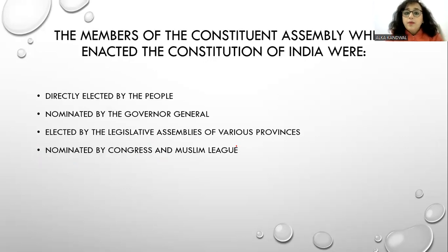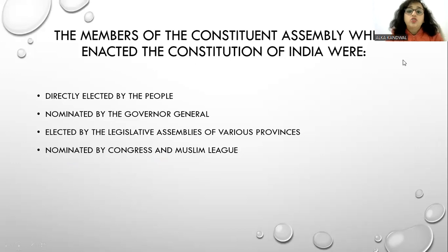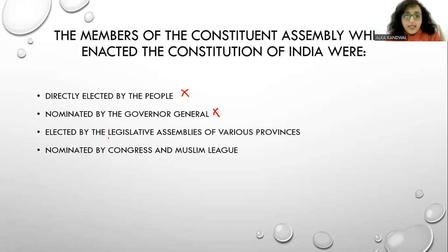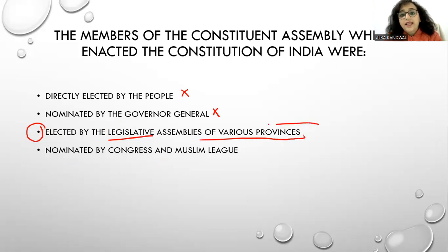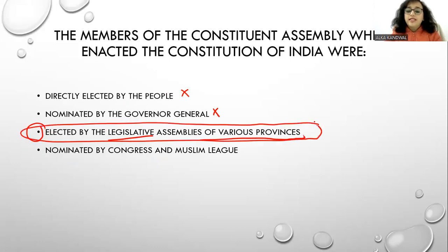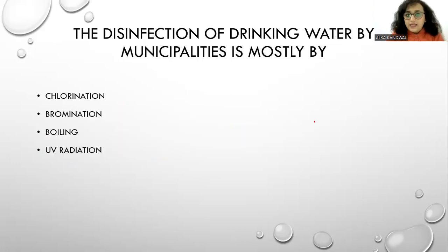The members of the Constituent Assembly who enacted the Constitution of India — were they directly elected by the people? No. Were they nominated by the Governor General? No. They were elected by the legislative assemblies of the various provinces. Option C is the correct answer.